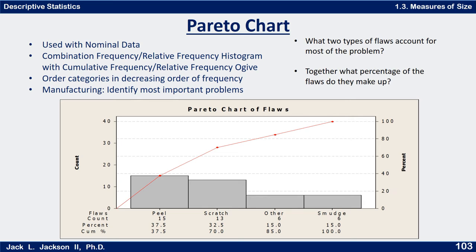So technically speaking, the bars shouldn't actually touch here. What we're going to do is put these in a decreasing order. In this case, we're taking the count of a bunch of items that have some kind of flaws in them.